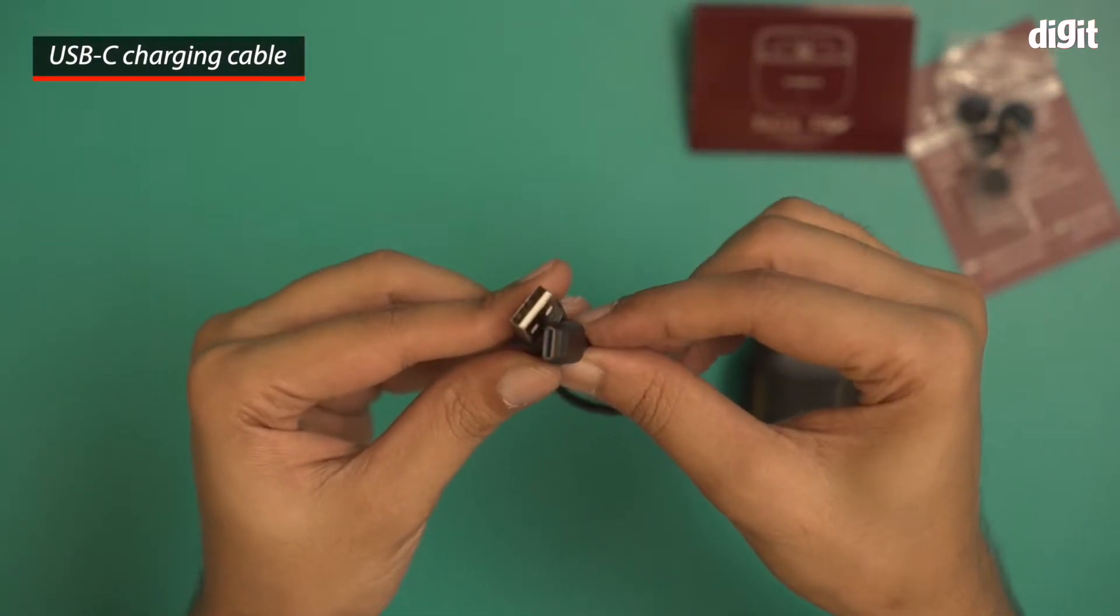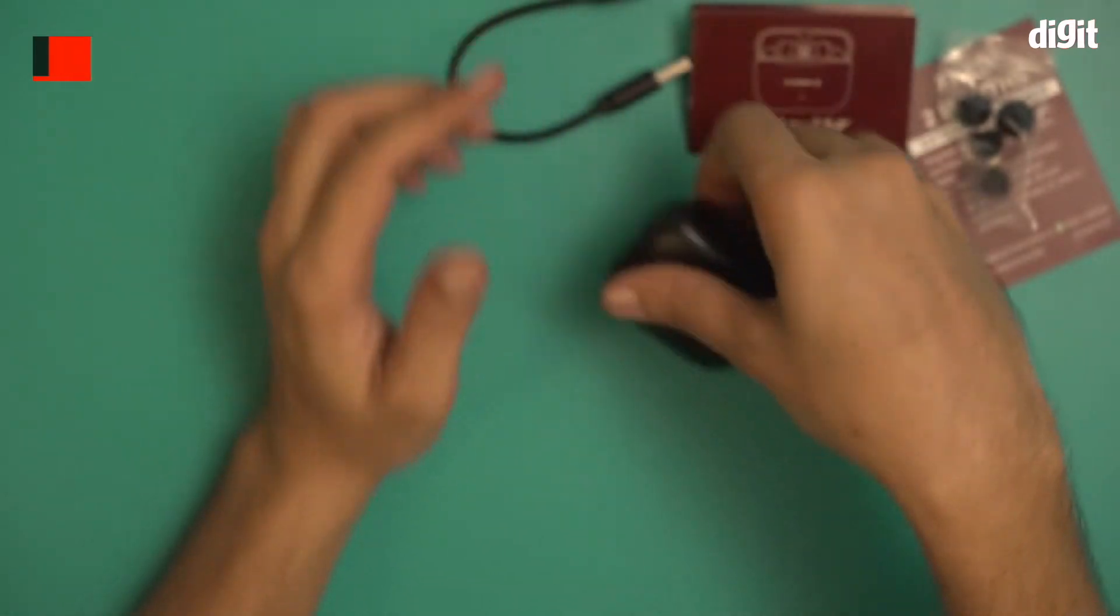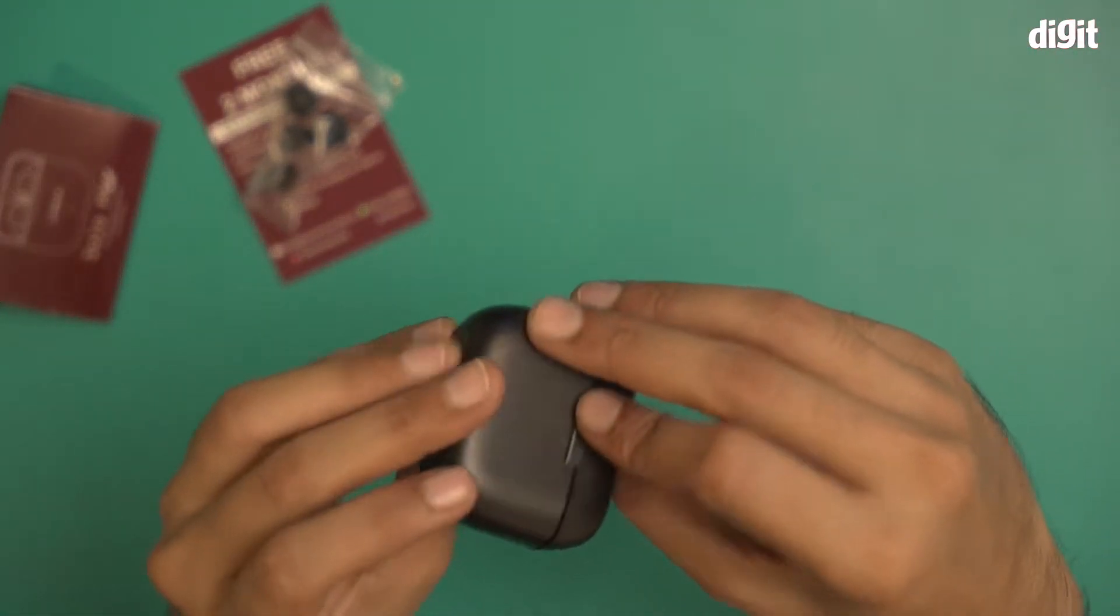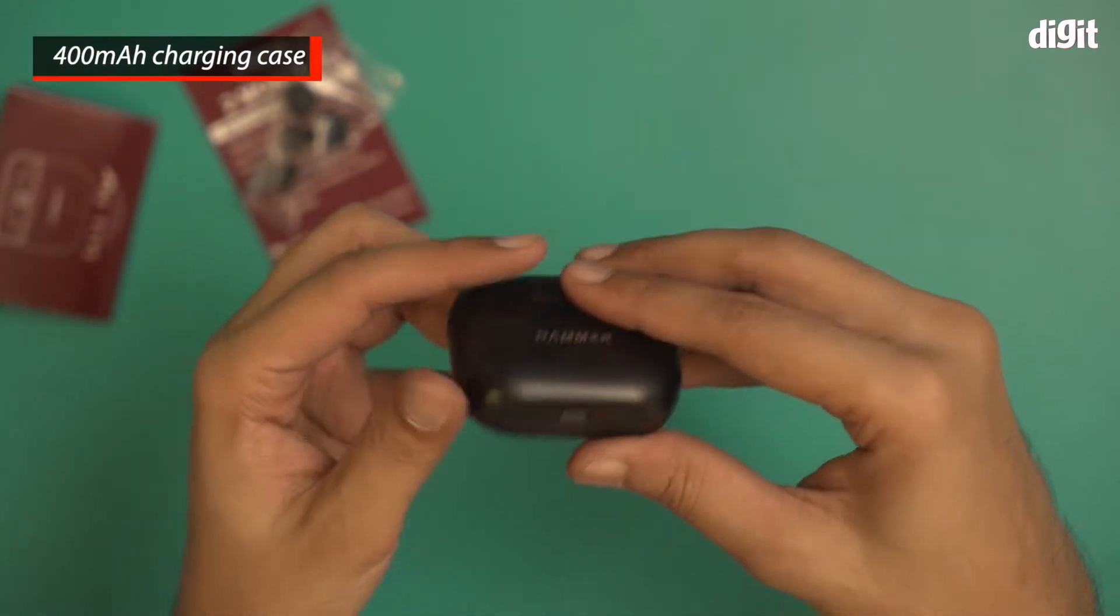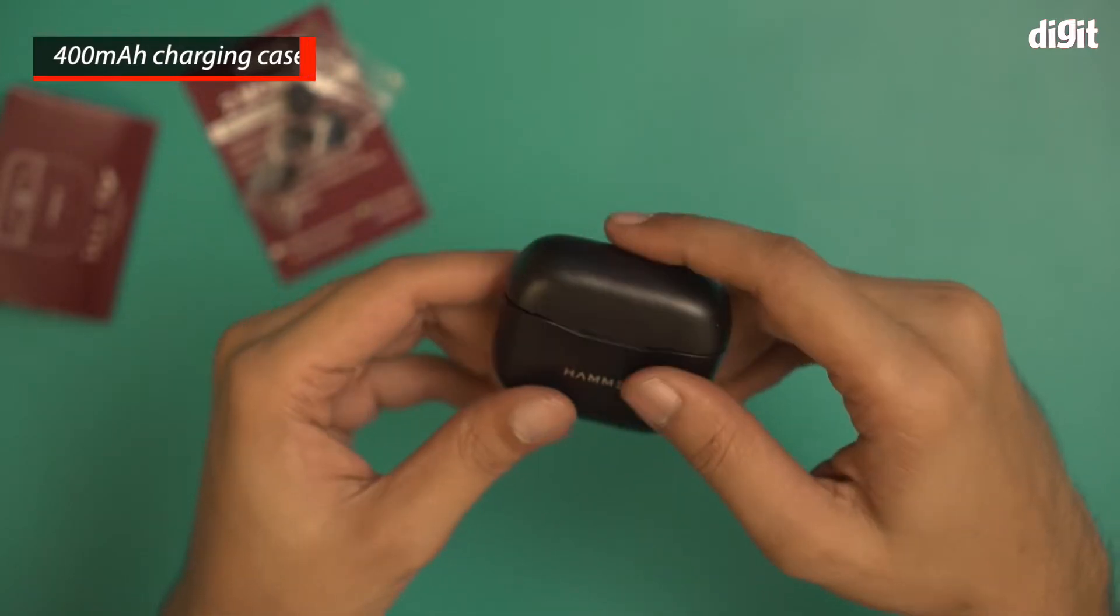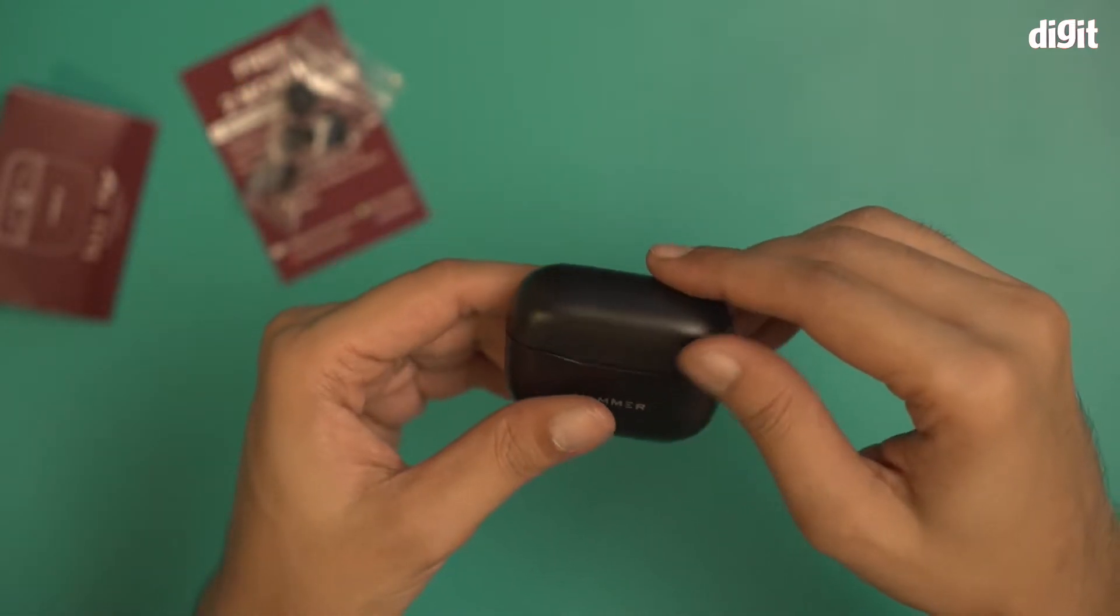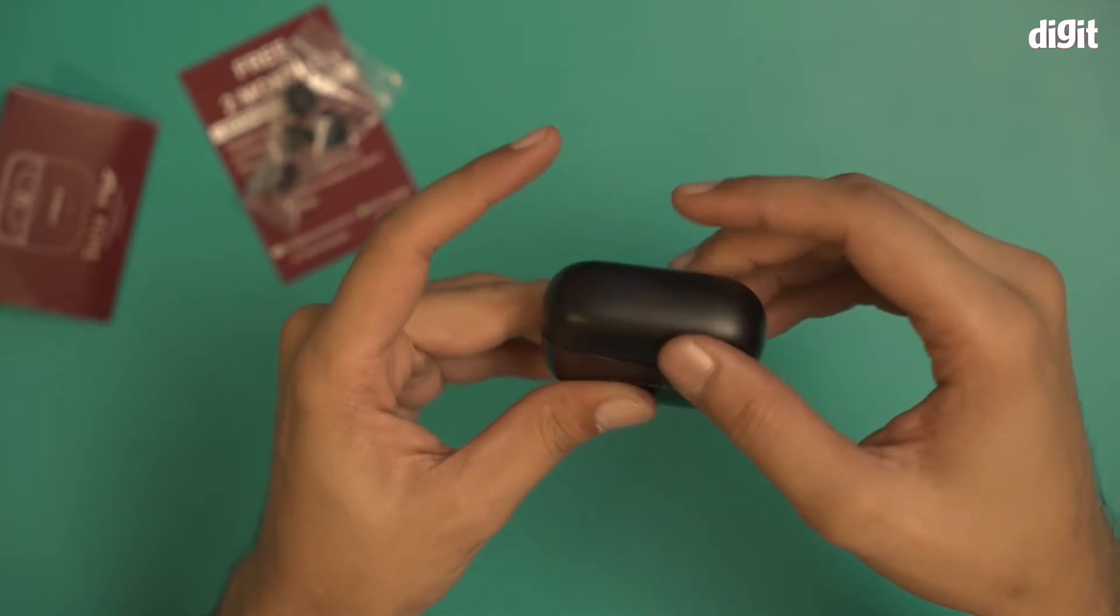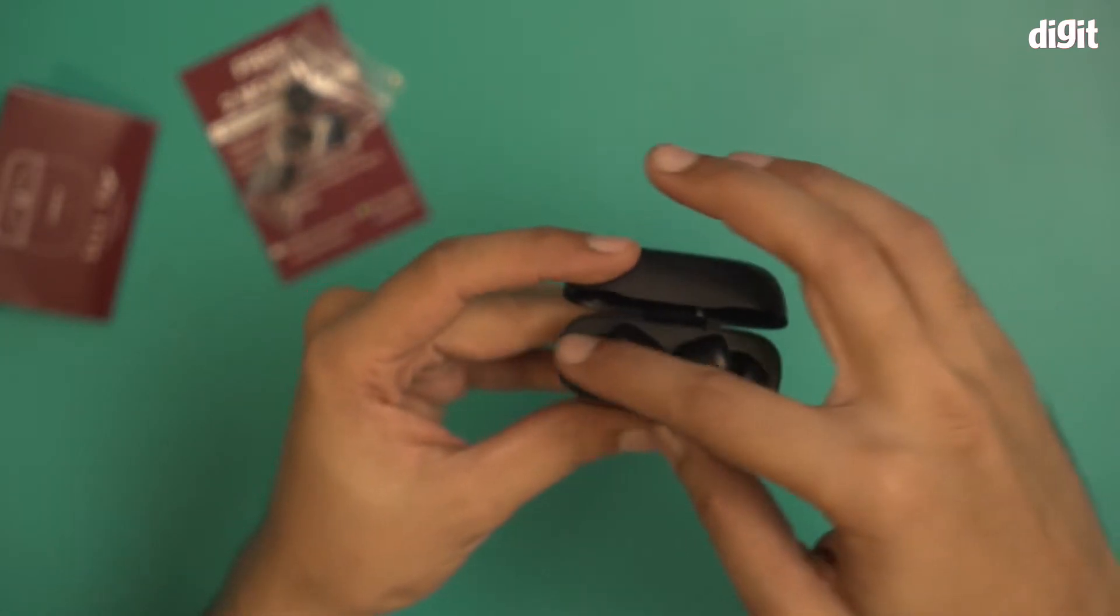Now let's take a look at the headsets themselves. This is the charging case, a 400 mAh charging case. This is the USB-C port right under it. It has a matte black finish as well, and you can lift the top just like this to see the half in-ear design earbuds inside.